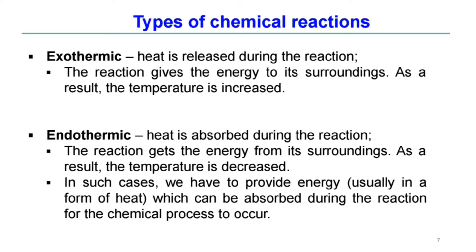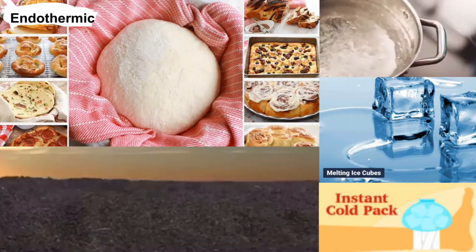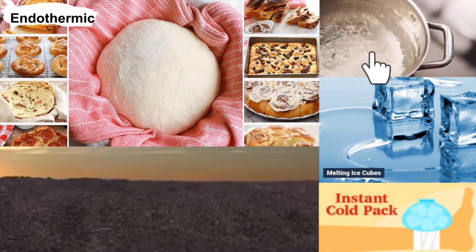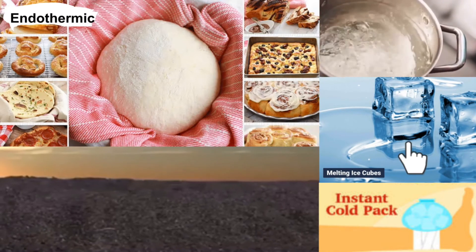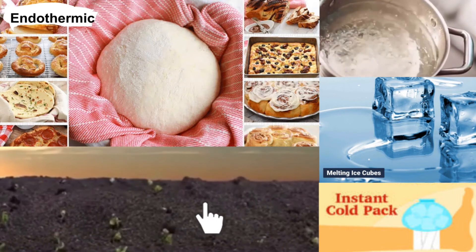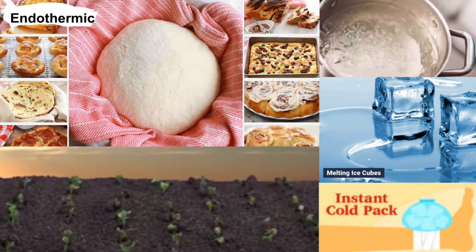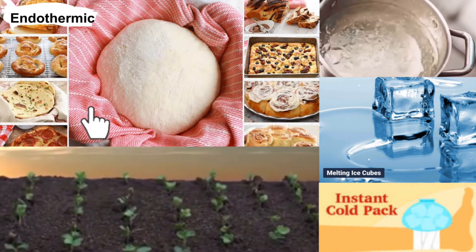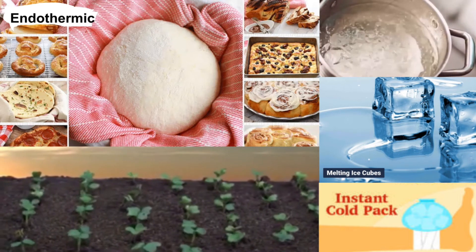For an endothermic reaction, heat is absorbed from the surroundings, and we can see a decrease in the temperature of the substance. Examples include boiling water, melting ice, photosynthesis, making dough for pastry, and the use of cold packs.